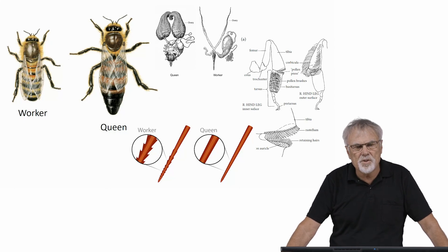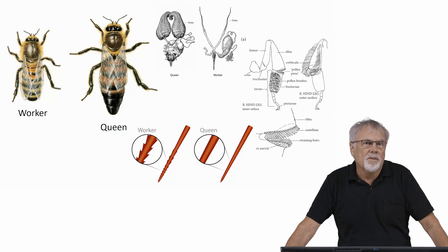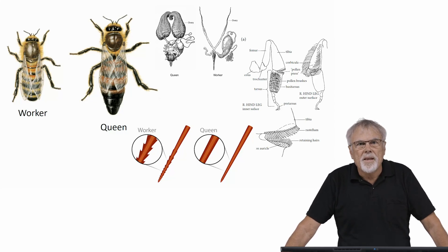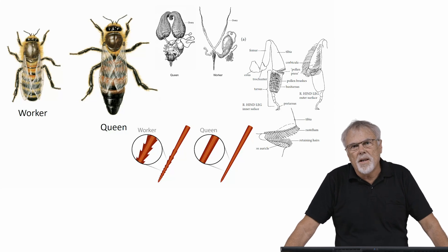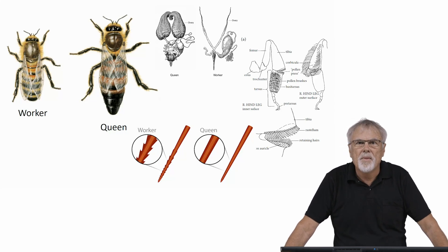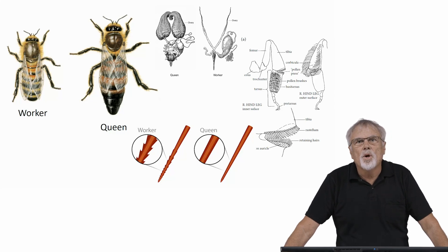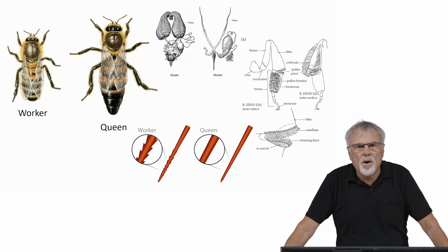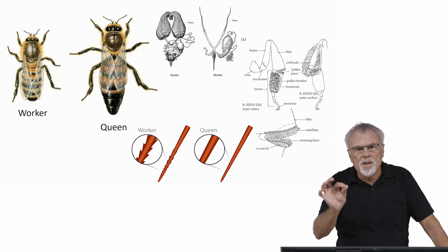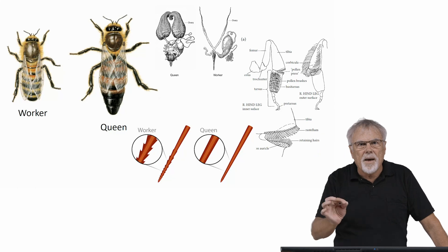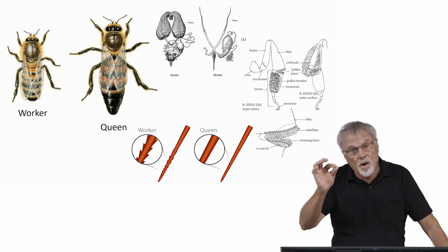The vision of the worker is much better. But when you go internally, you find other important differences. At the top center there are diagrams of the ovaries — the left shows the ovaries of a queen, the right shows the ovaries of a worker. The ovaries of the queen contain far more ovarials — those are the long, slender tubules that comprise the ovary.